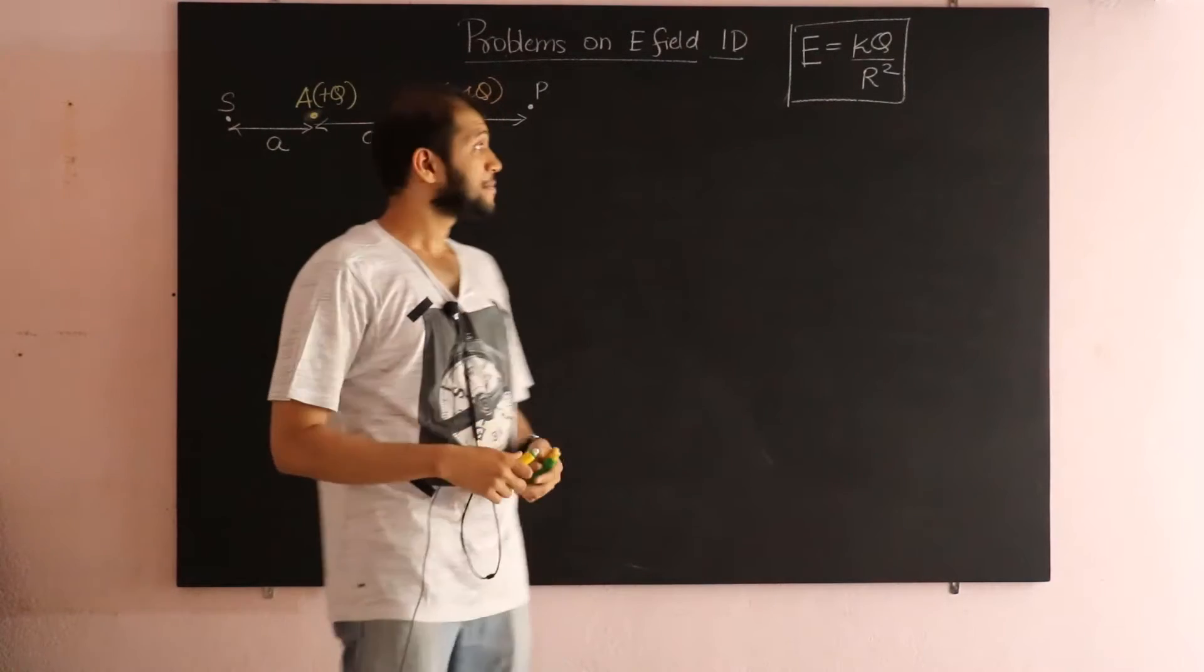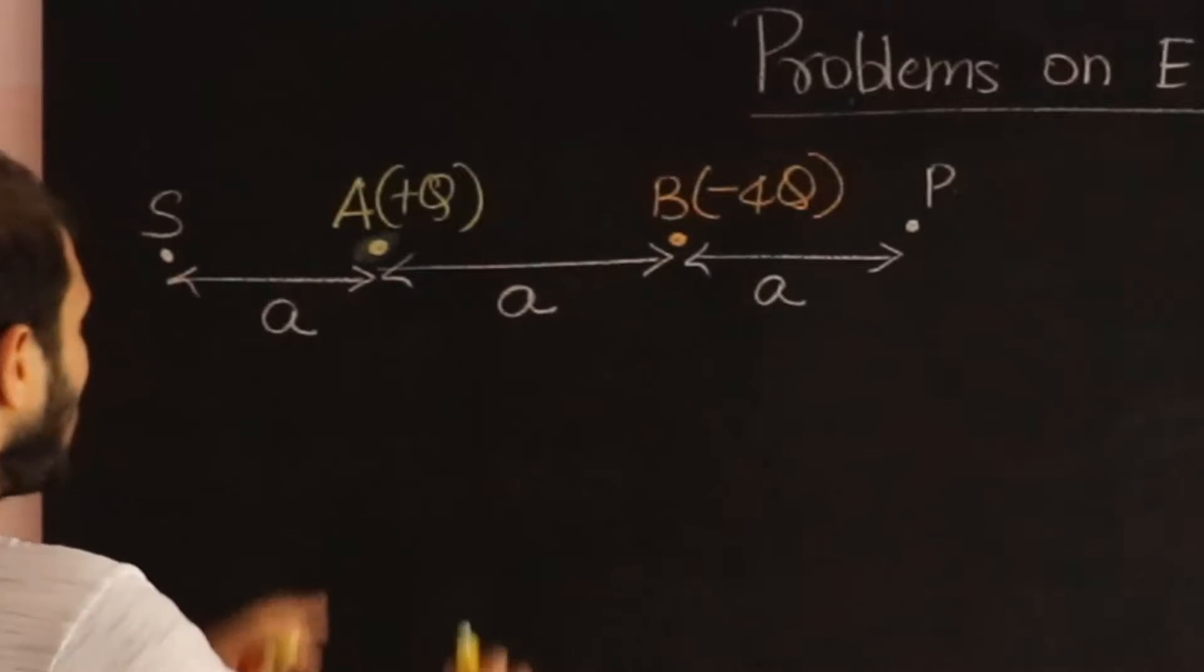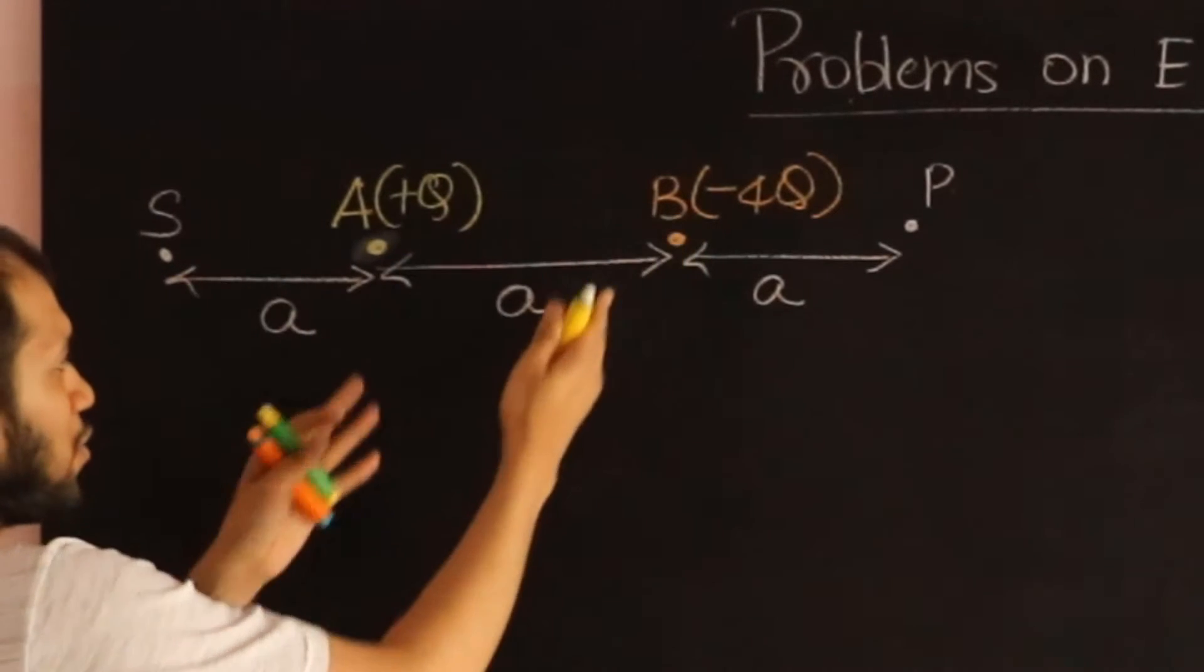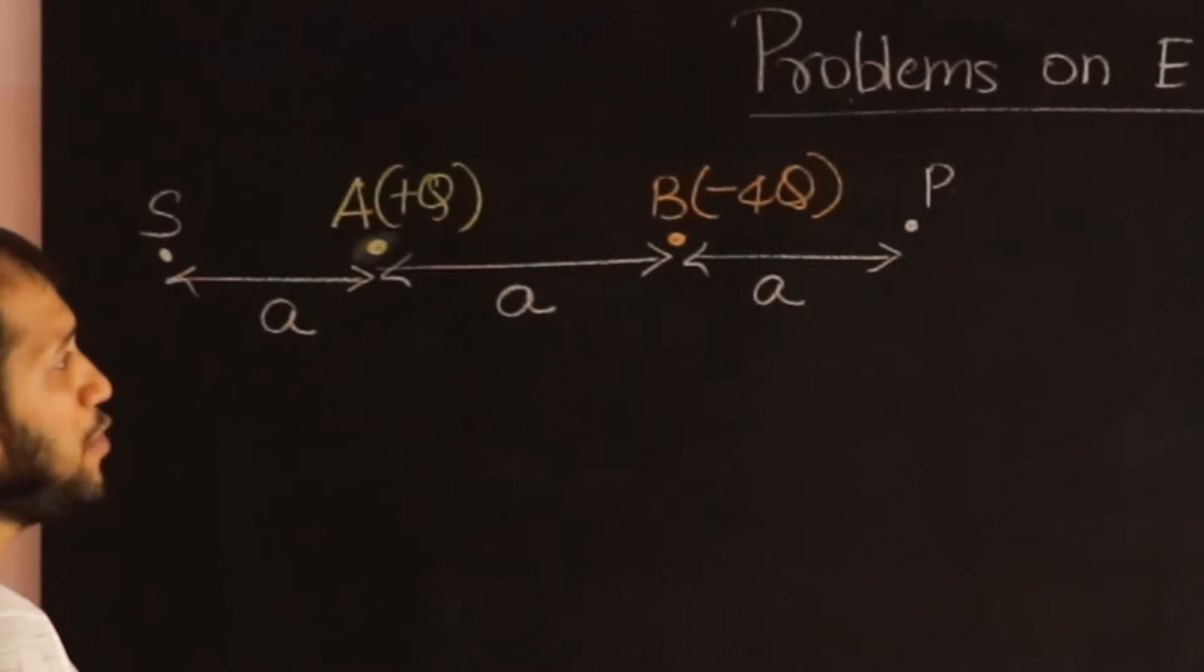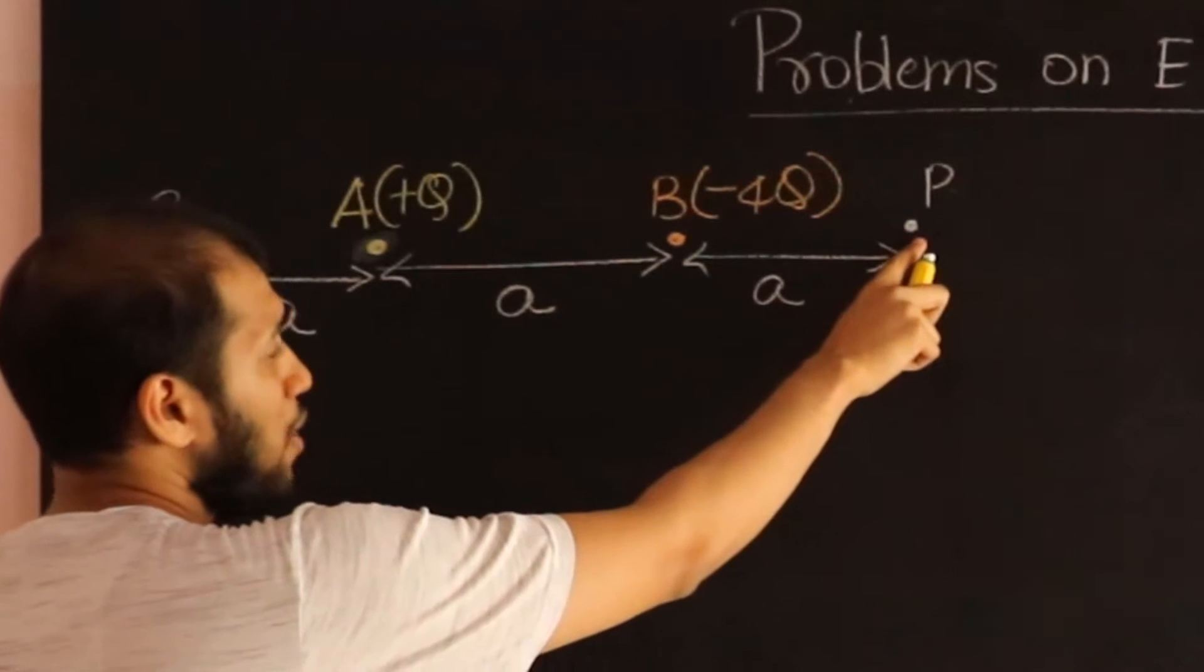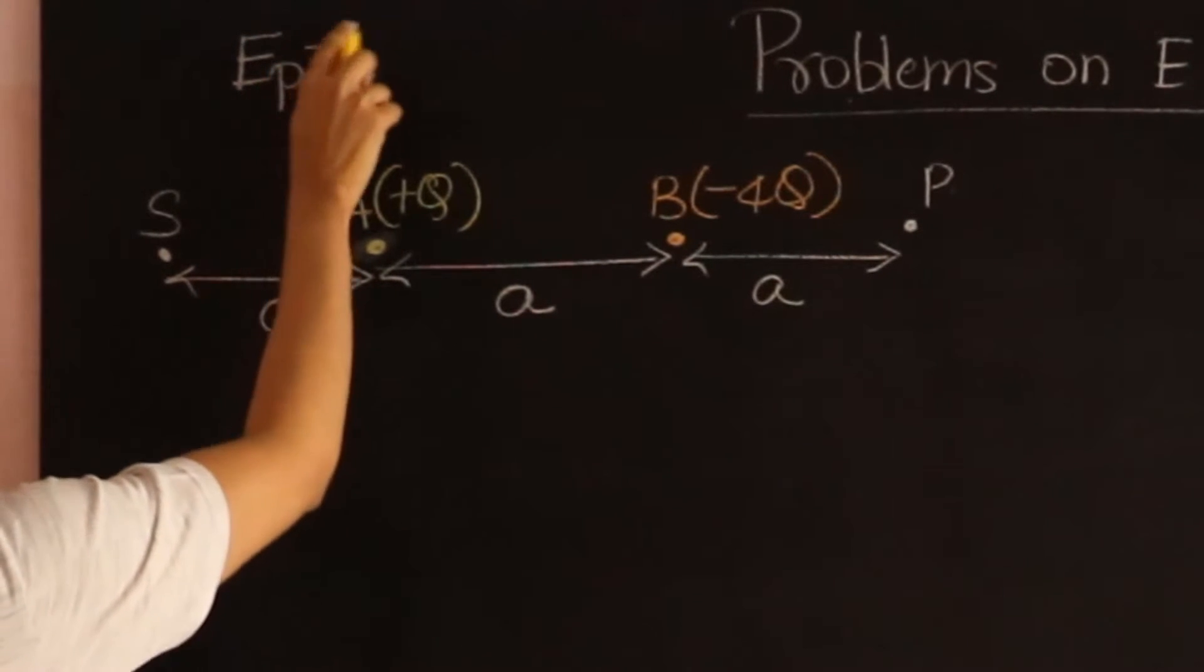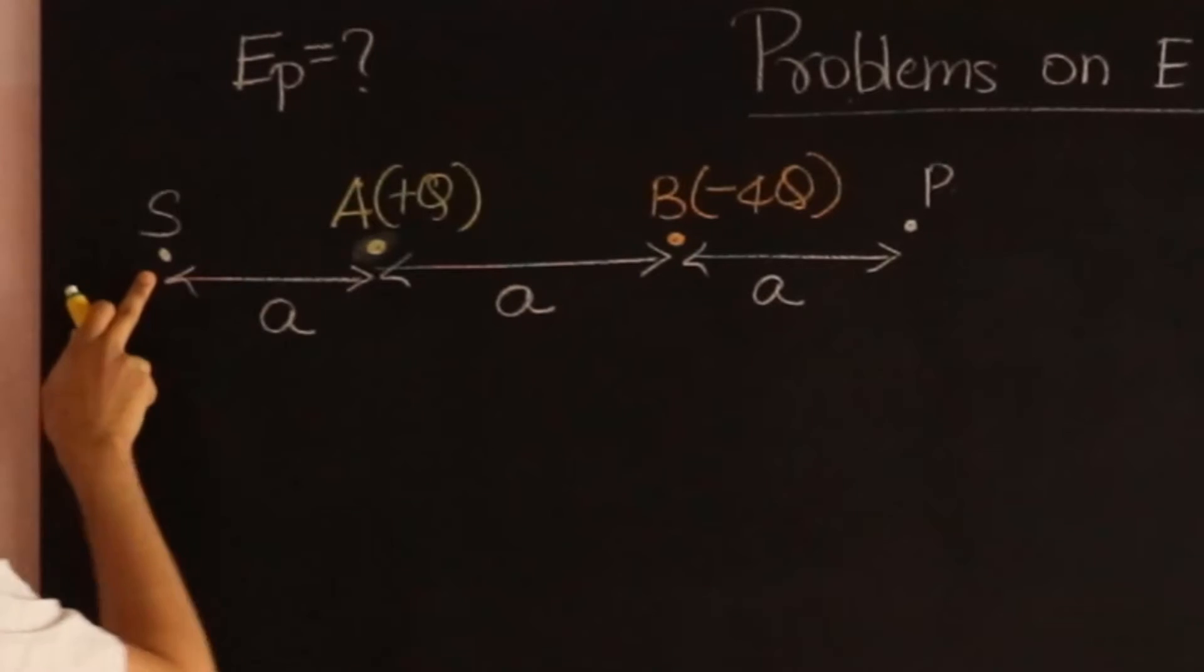Let's consider a second problem. In this problem again we have been given two charges, plus q and minus 4q separated by distance a, and we are asked to figure out the electric field at this point P, so I need to calculate what electric field at point P is, and electric field at point S.